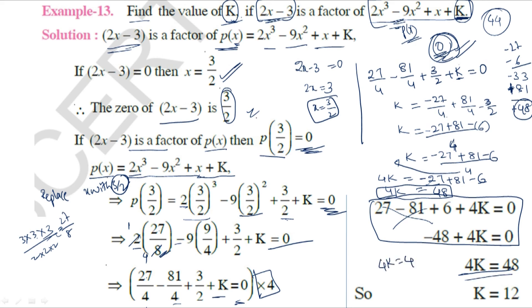Since 4K = 48, we divide both sides by 4: K = 48/4 = 12. Therefore, K = 12.